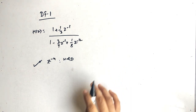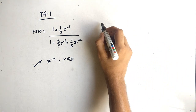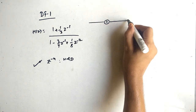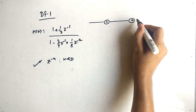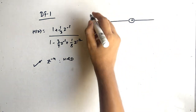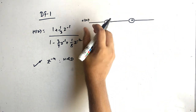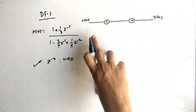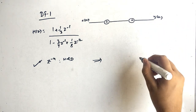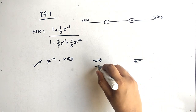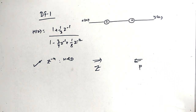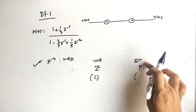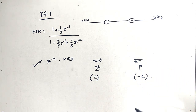Now let's talk about the direct form 1 structure. The shortcut trick is: first you should have a line where on the left-hand side we have x of n, and on the right-hand side we have y of n. On the left side we will have zeros, and on the right side we will have poles. For zeros, coefficients remain as-is, whereas for poles, because it is in the backward direction, the coefficient will be the negative of the coefficient.